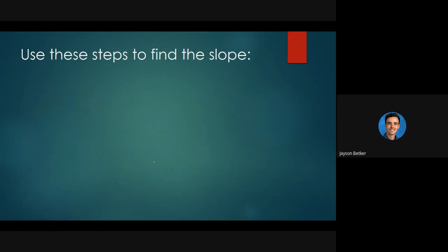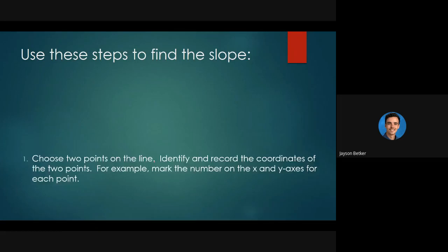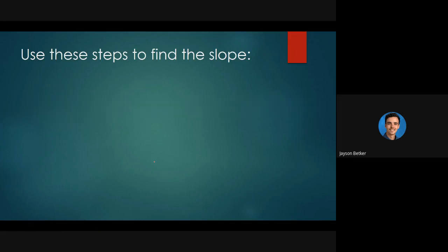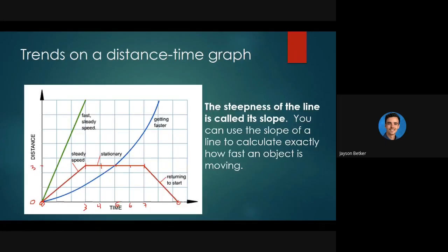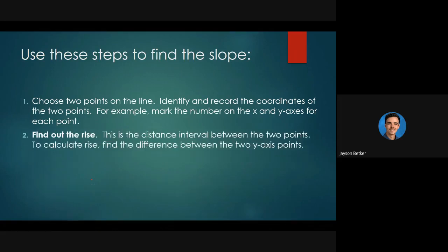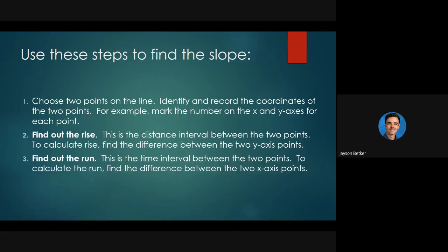Let's talk about how to find a slope. First, choose two points on the line and identify and record the coordinates of those two points. I'd always suggest using the point (0, 0) if you can — it makes your life easier. Mark the number on the y-axis and the x-axis for each point and write down what those points are. Then find the rise — which is the distance interval between the two points on the y-axis — the change in your y values.